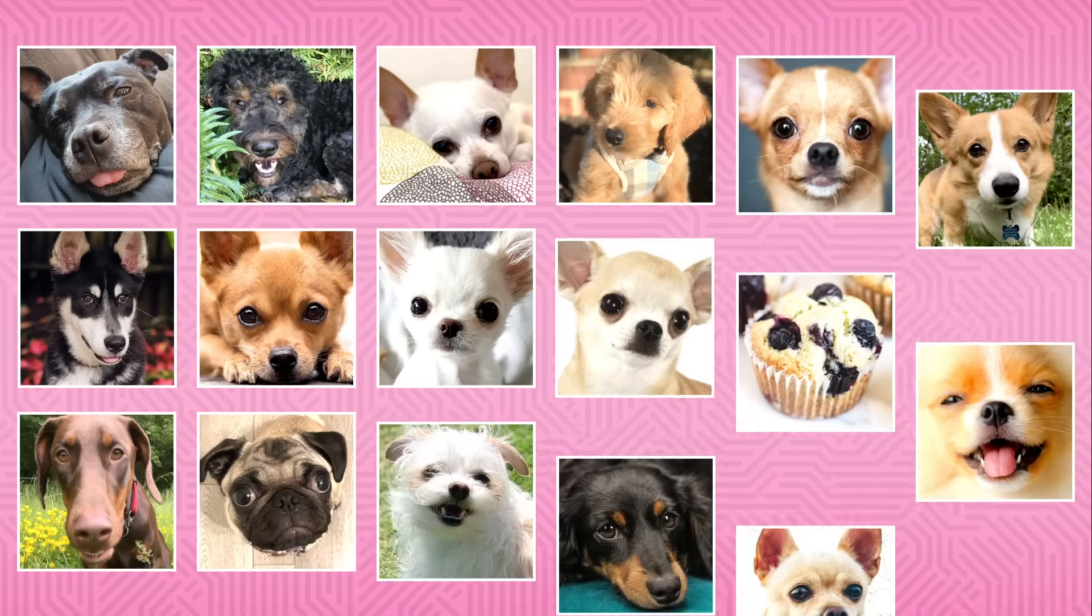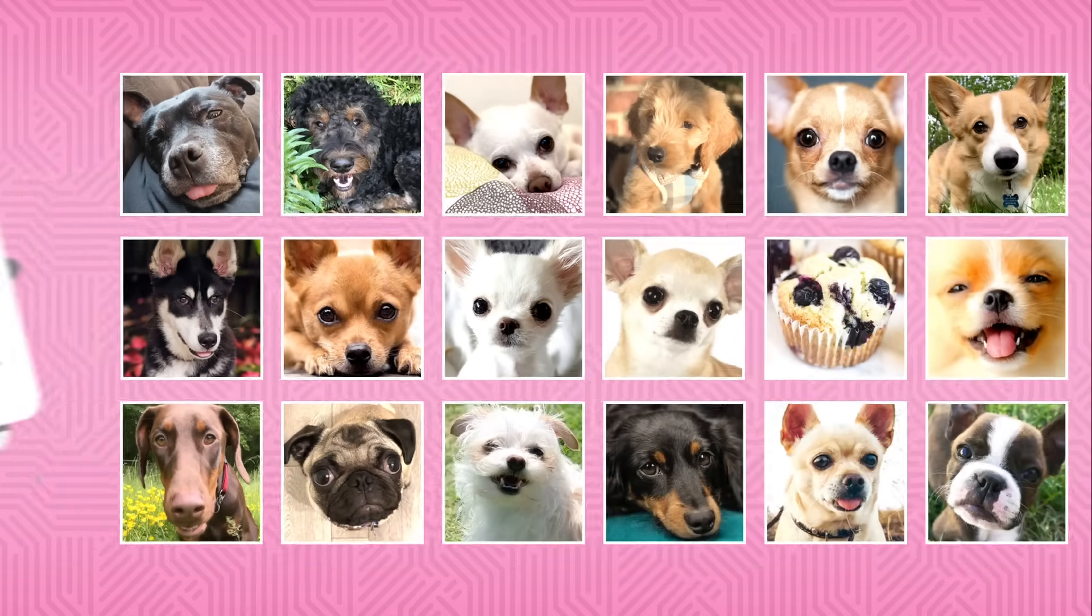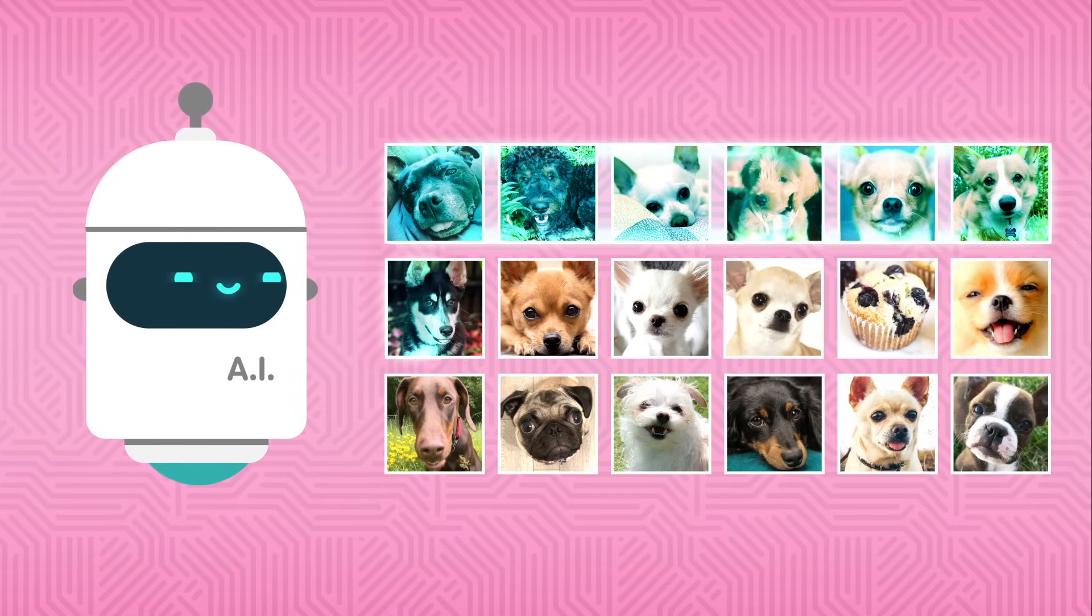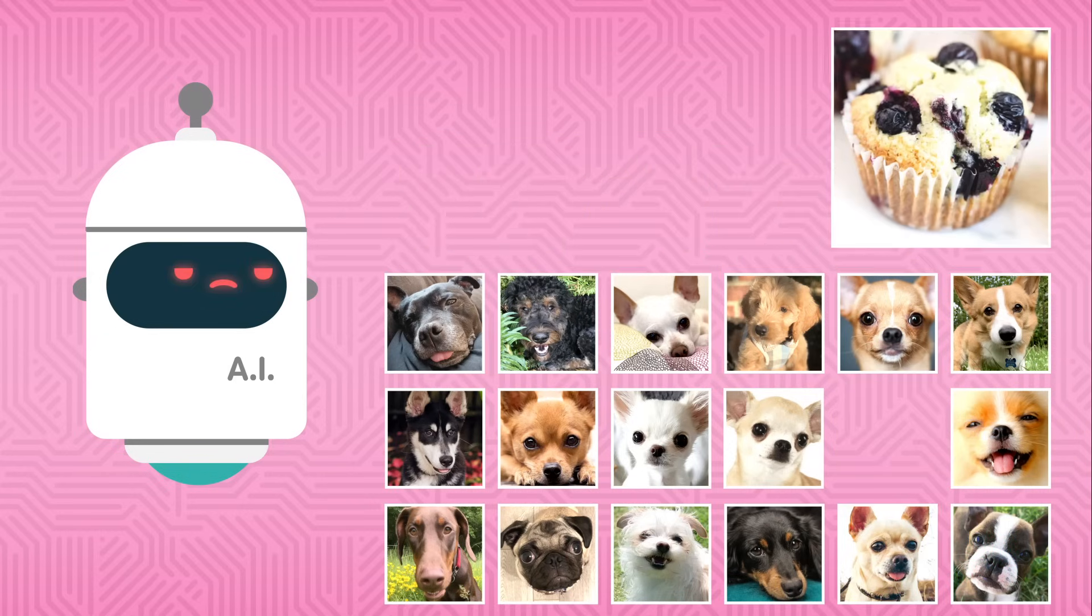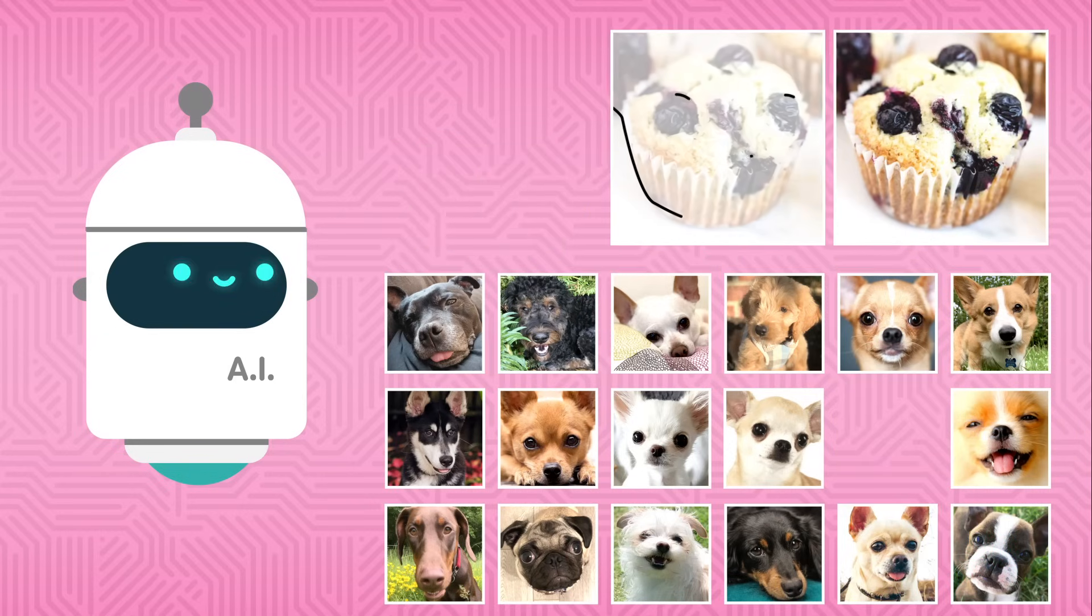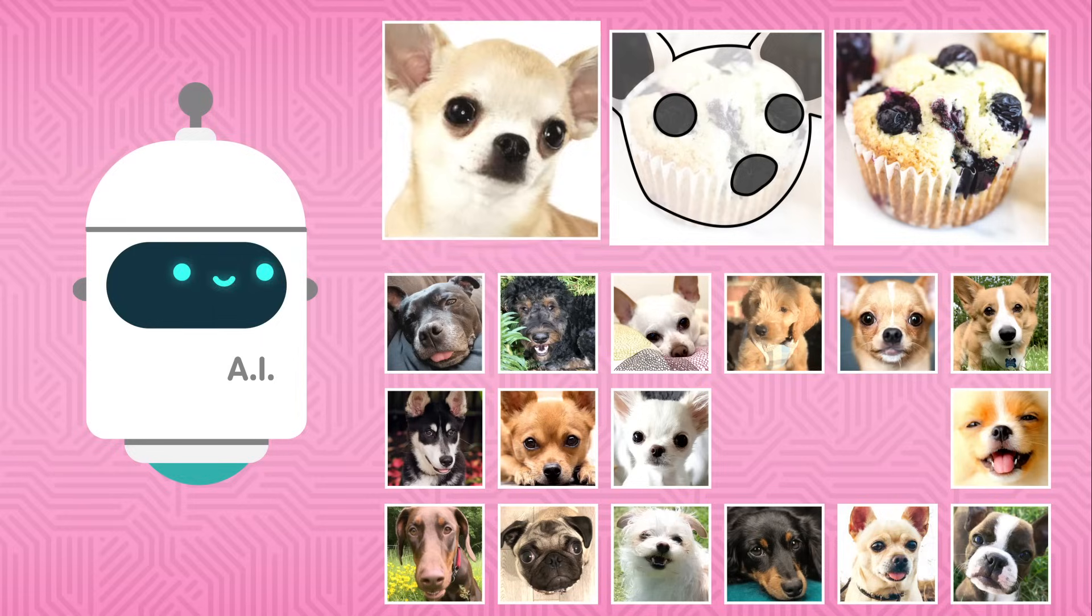Sometimes problems in computer vision are silly, like when a computer gets confused trying to tell the difference between these dogs. Oh wait, that's not a dog. But it does kind of look like a dog, at least this dog.